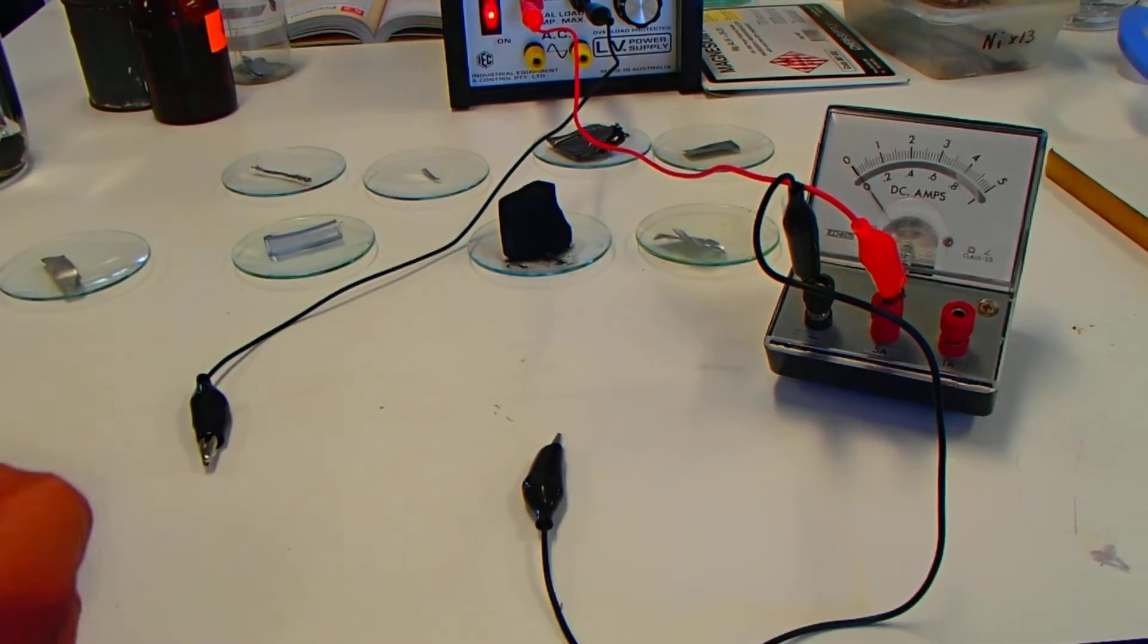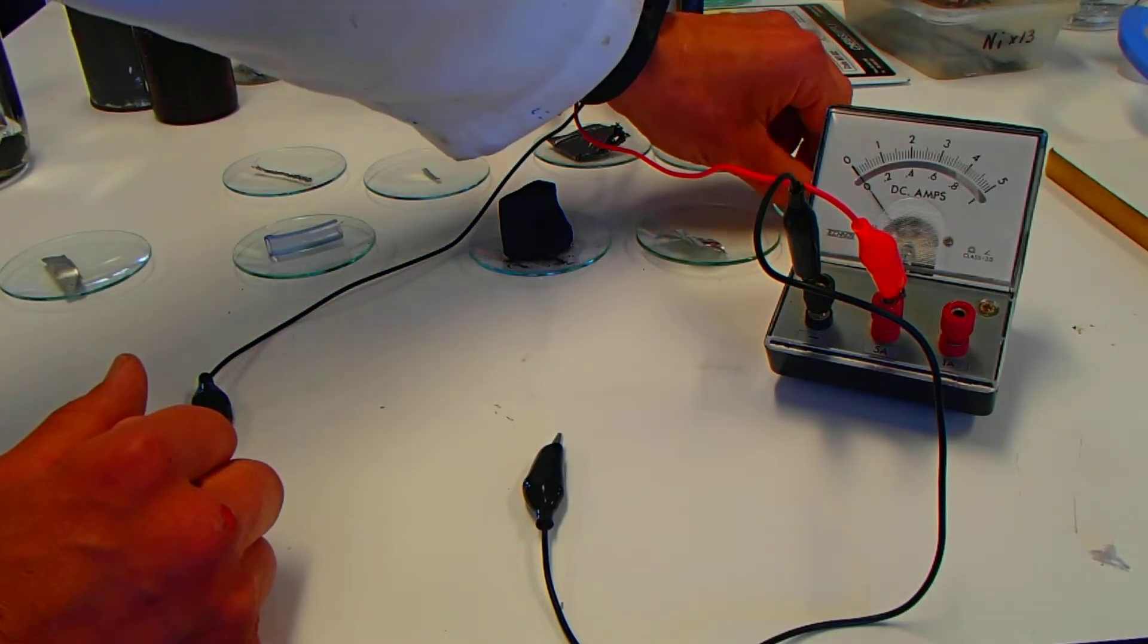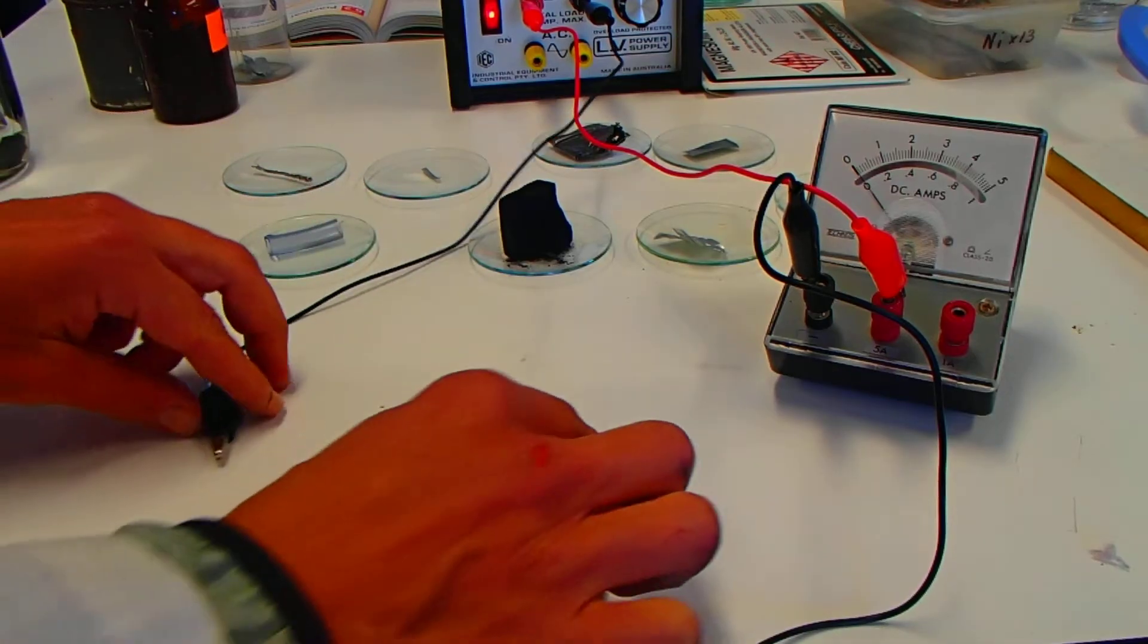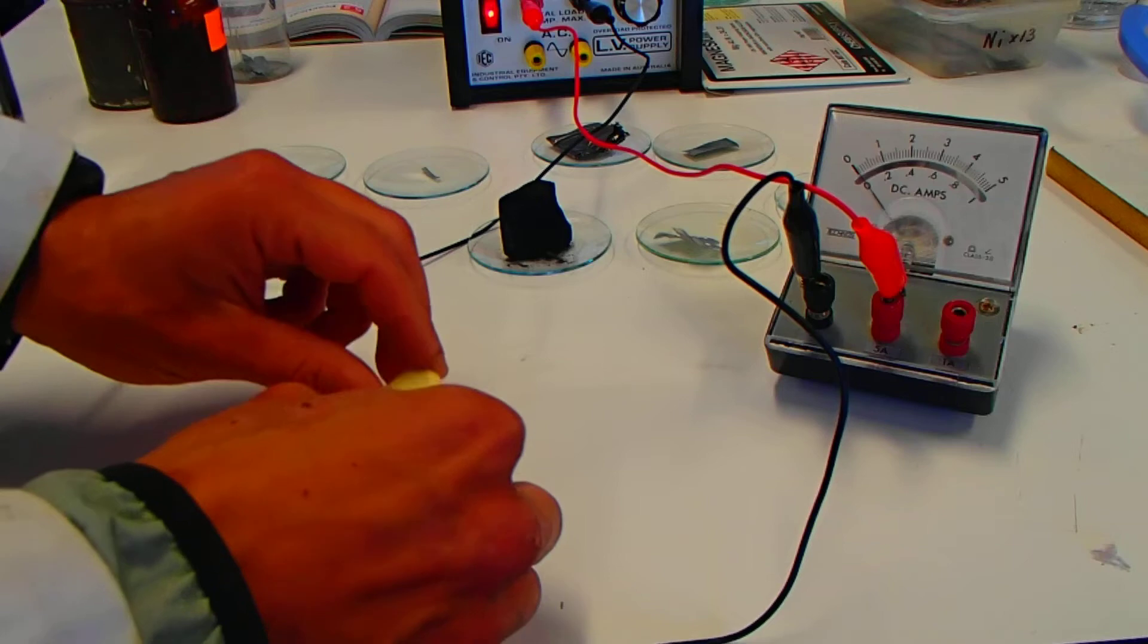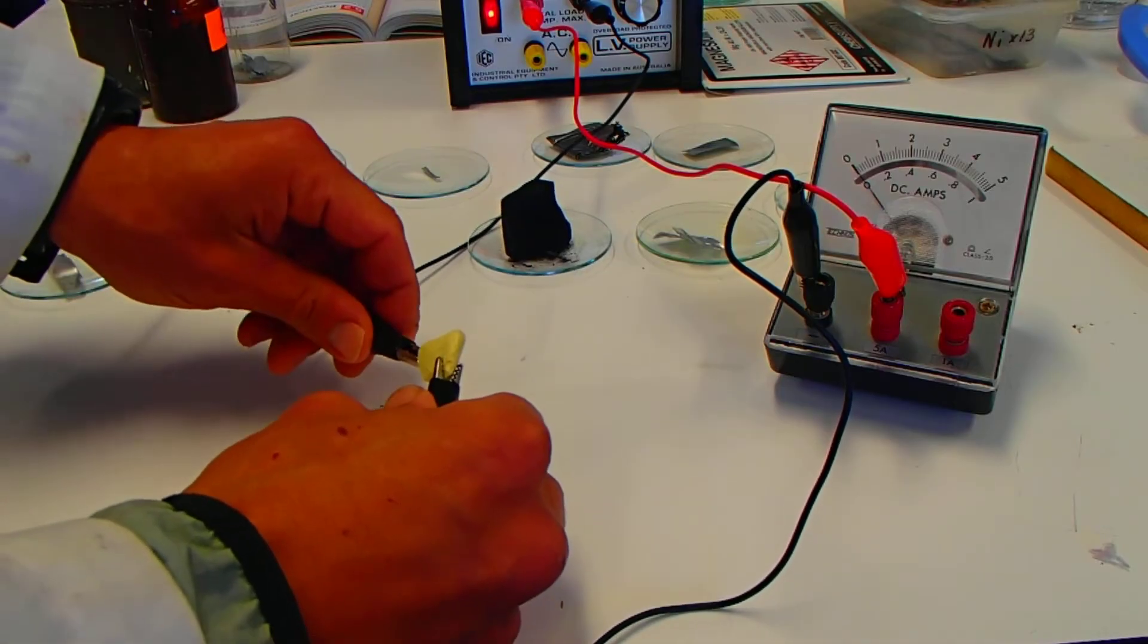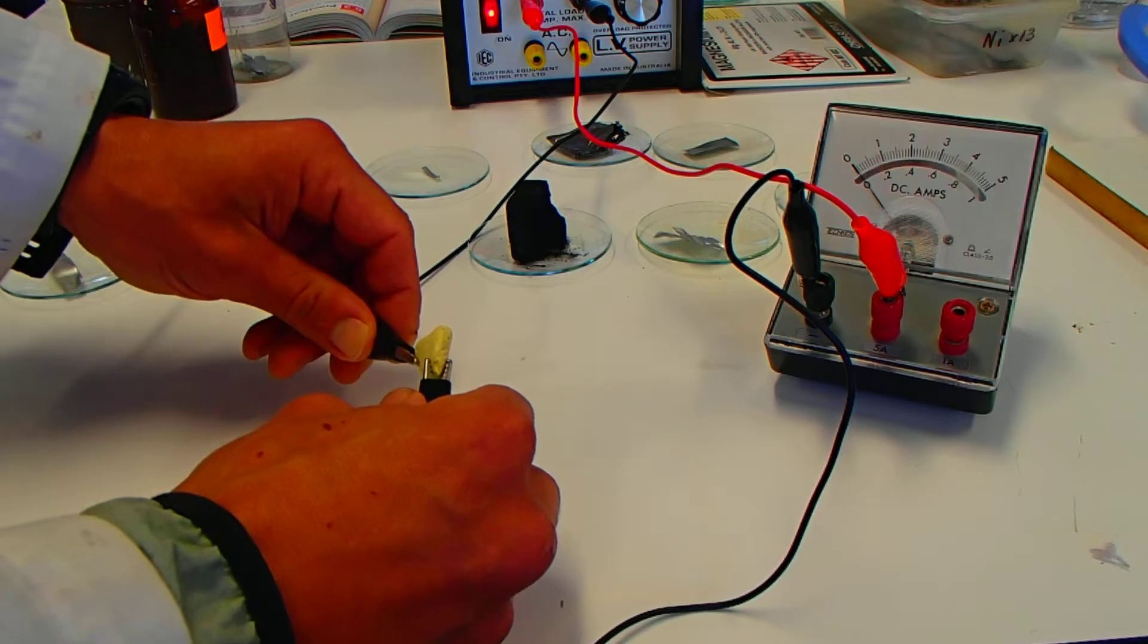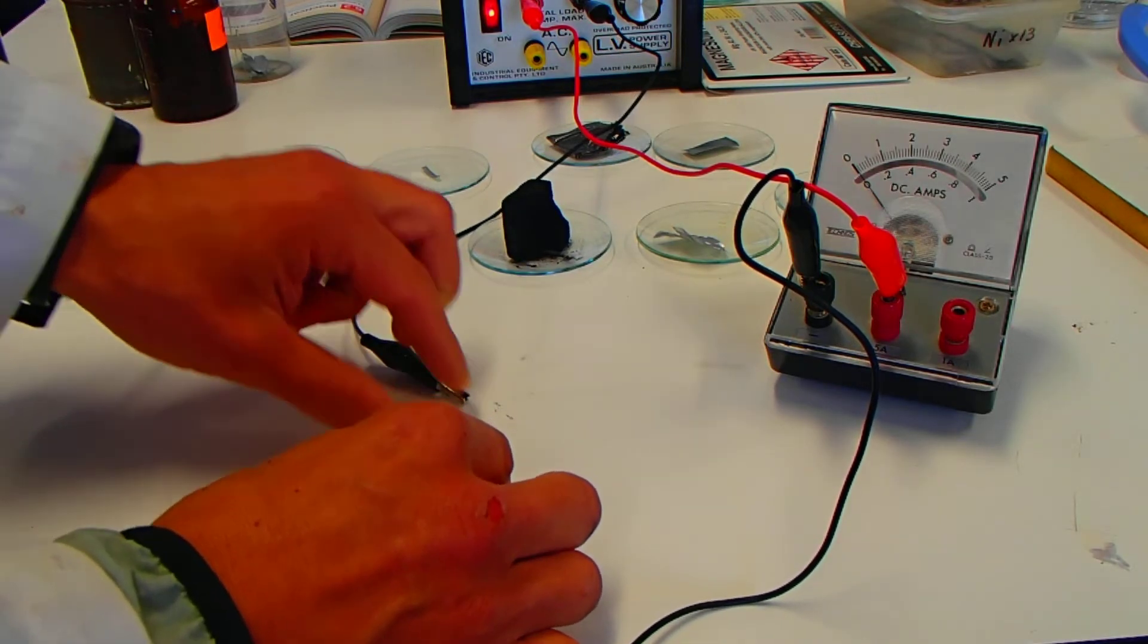Now again, we're going to be testing our nine samples that we have here today. So first of all is our sulfur. Let's see if the sulfur has any current passing through it. I'm going to touch it on there. No, I might even clip some on just to get a definite clip there. And no, nothing going through there at all. So again, that might suggest something about the nature of sulfur.